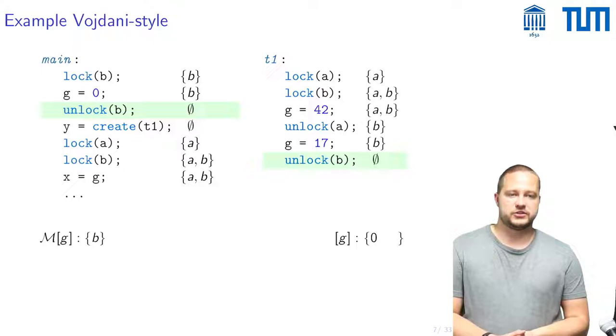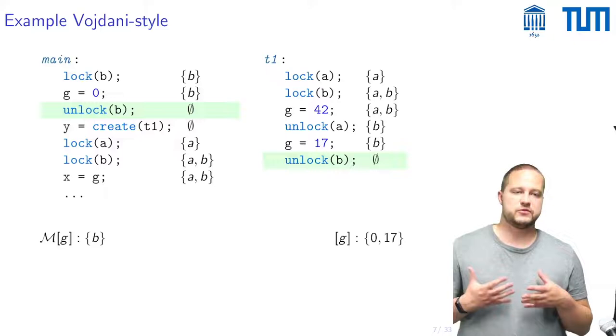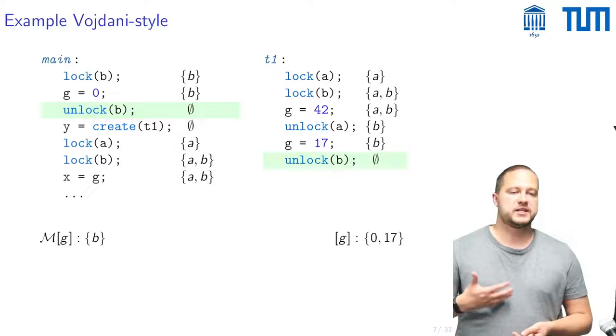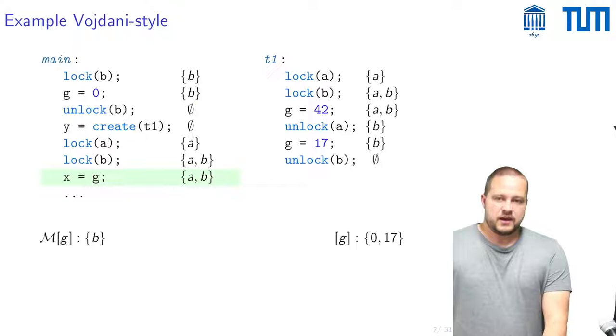What's important to notice here is that this value G equals 42 does not need to be published here because it's completely local and has been overwritten before these protecting mutexes were given up.